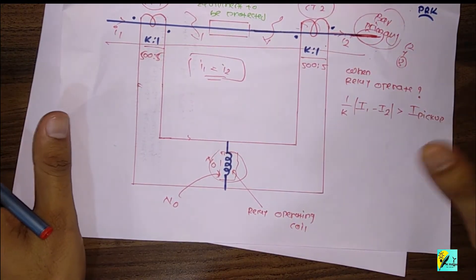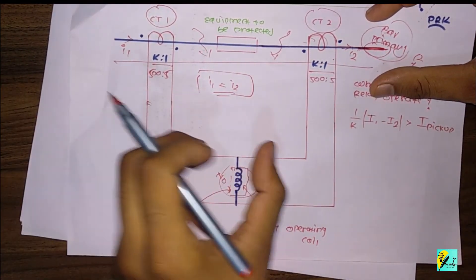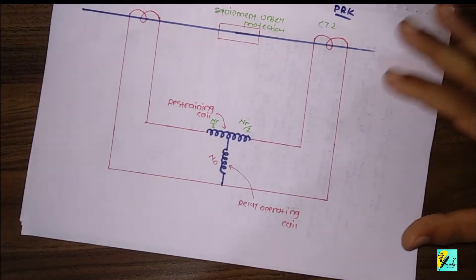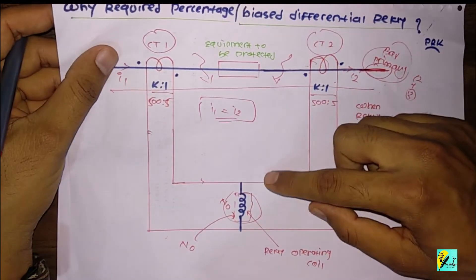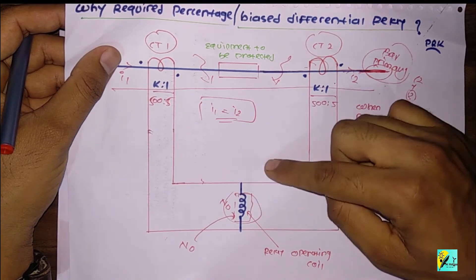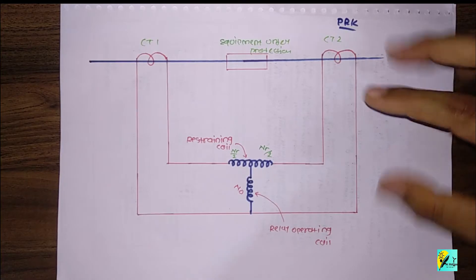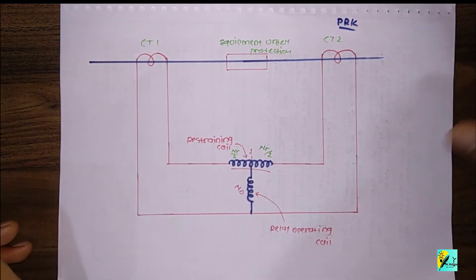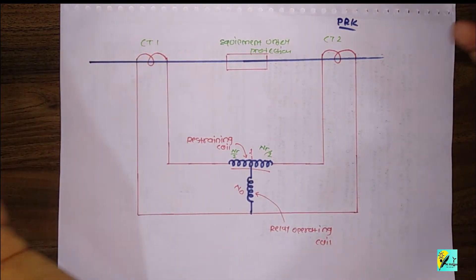That is why we need to improve this particular section. So we replace the simple differential section with a restraining coil. This is the simplest structure of the differential relay — it contains only the operating coil. But in the improved structure, this additional coil is called the restraining coil, which will produce a force or torque that opposes the operating coil of the relay.